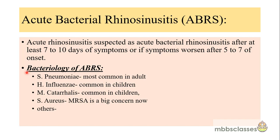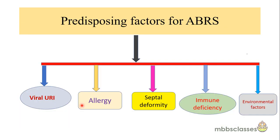The most common bacterium responsible for acute bacterial rhinosinusitis in adults is Streptococcus pneumoniae. In children, the microbiology is slightly different — it is due to Haemophilus influenzae and Moraxella catarrhalis. Methicillin-resistant Staphylococcus aureus (MRSA) is also a big concern nowadays.